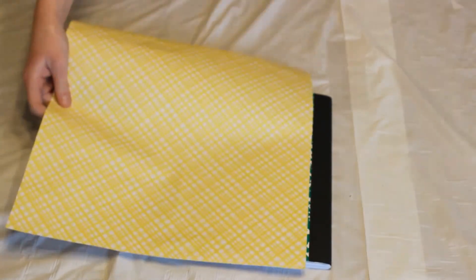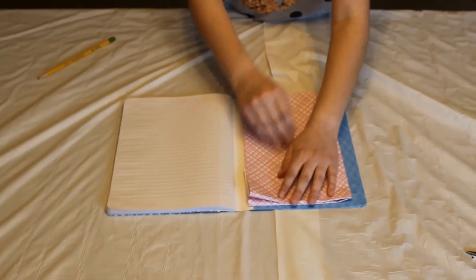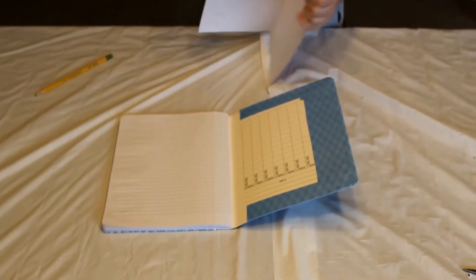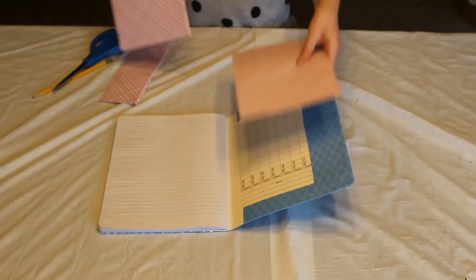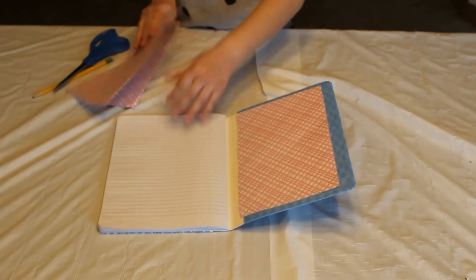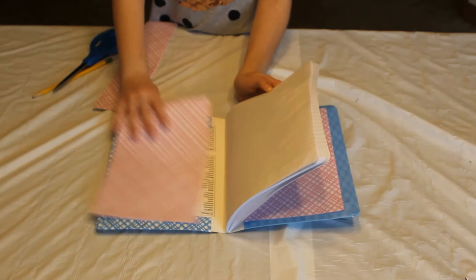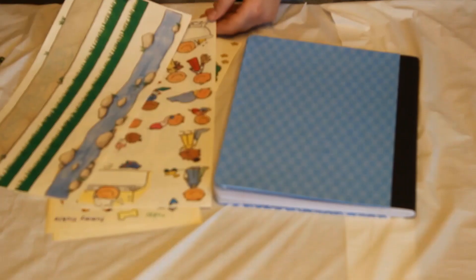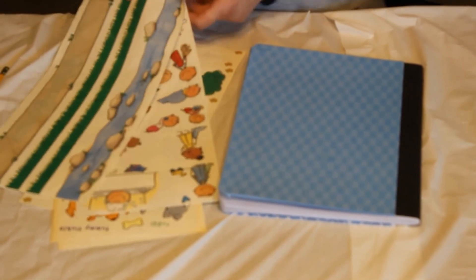Now flip it over and do the same steps on the back. Then cut a piece for the inside. Fold it where you think it would work, like right here, and cut where you folded. Then glue it here. Don't throw this piece away because you'll use it for the other side.